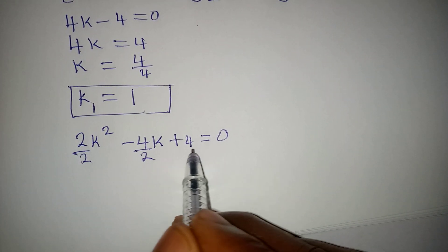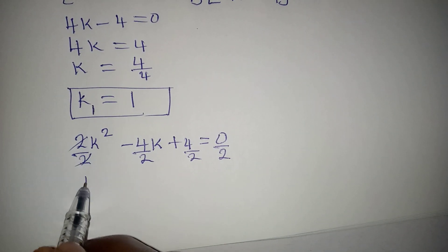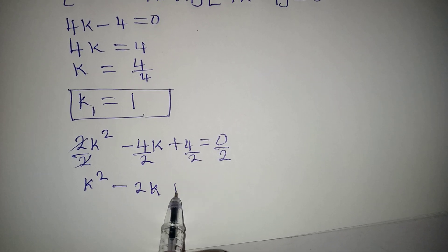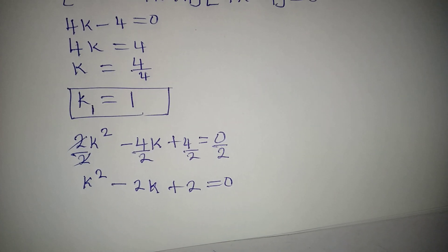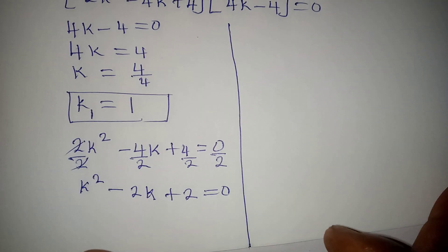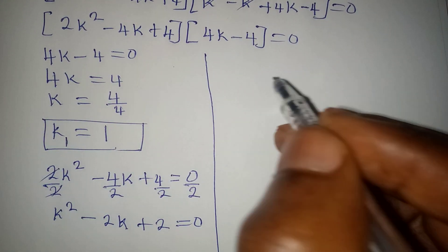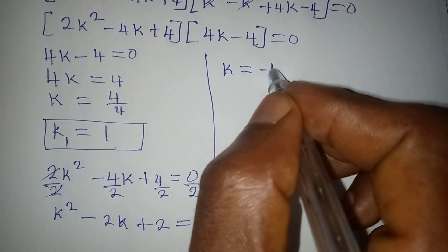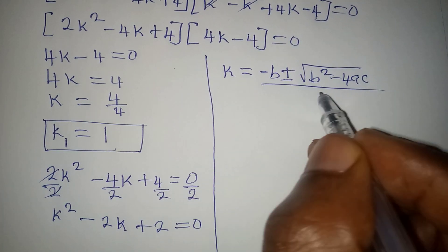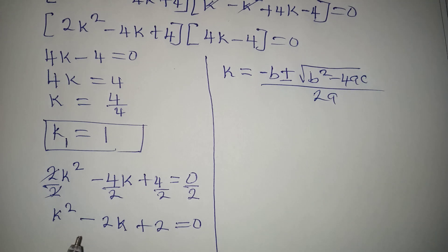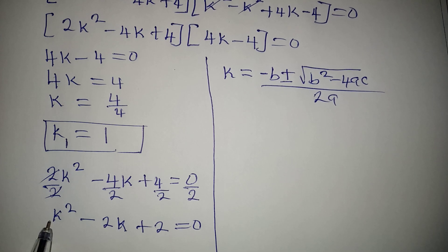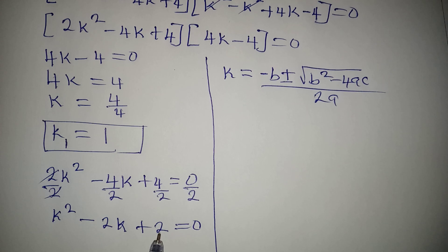We can divide the quadratic by 2 throughout, giving k squared minus 2k plus 2 equals zero. We solve this using the quadratic formula: k equals minus b plus or minus the square root of b squared minus 4ac, all over 2a. Here a is 1, b is minus 2, and c is 2.